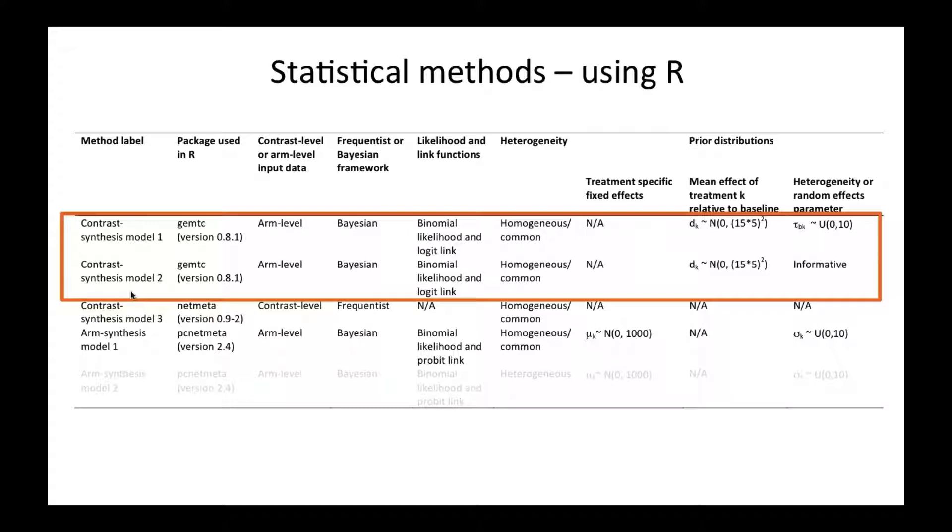The first three methods are titled contrast synthesis and these are contrast-based likelihood methods. The first two in particular are contrast synthesis models in a Bayesian framework. The main difference is that in the first model, we use an uninformative or uniform prior to estimate the between-trial heterogeneity variance. In the second model, we use an informative prior. These informative priors have come from Turner's paper, where Turner and colleagues looked at about 15,000 meta-analyses from Cochrane systematic reviews and put together predictive distributions for between-trial heterogeneity variance based on the treatment comparisons and outcomes.